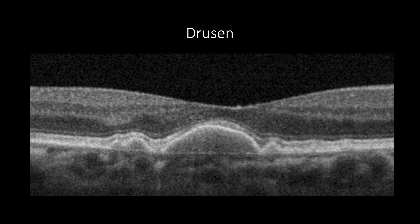OCT can accurately depict the number, type, location, and size of drusen and retinal and choroidal changes. Drusen appear in different sizes and shapes, and can have homogenous or heterogeneous content. Drusen are deposits of extracellular yellow material between the retinal pigment epithelium (RPE) and Bruch's membrane, mainly consisting of lipids and fatty proteins, and can be present as solo findings or associated with retinal or choroidal changes.